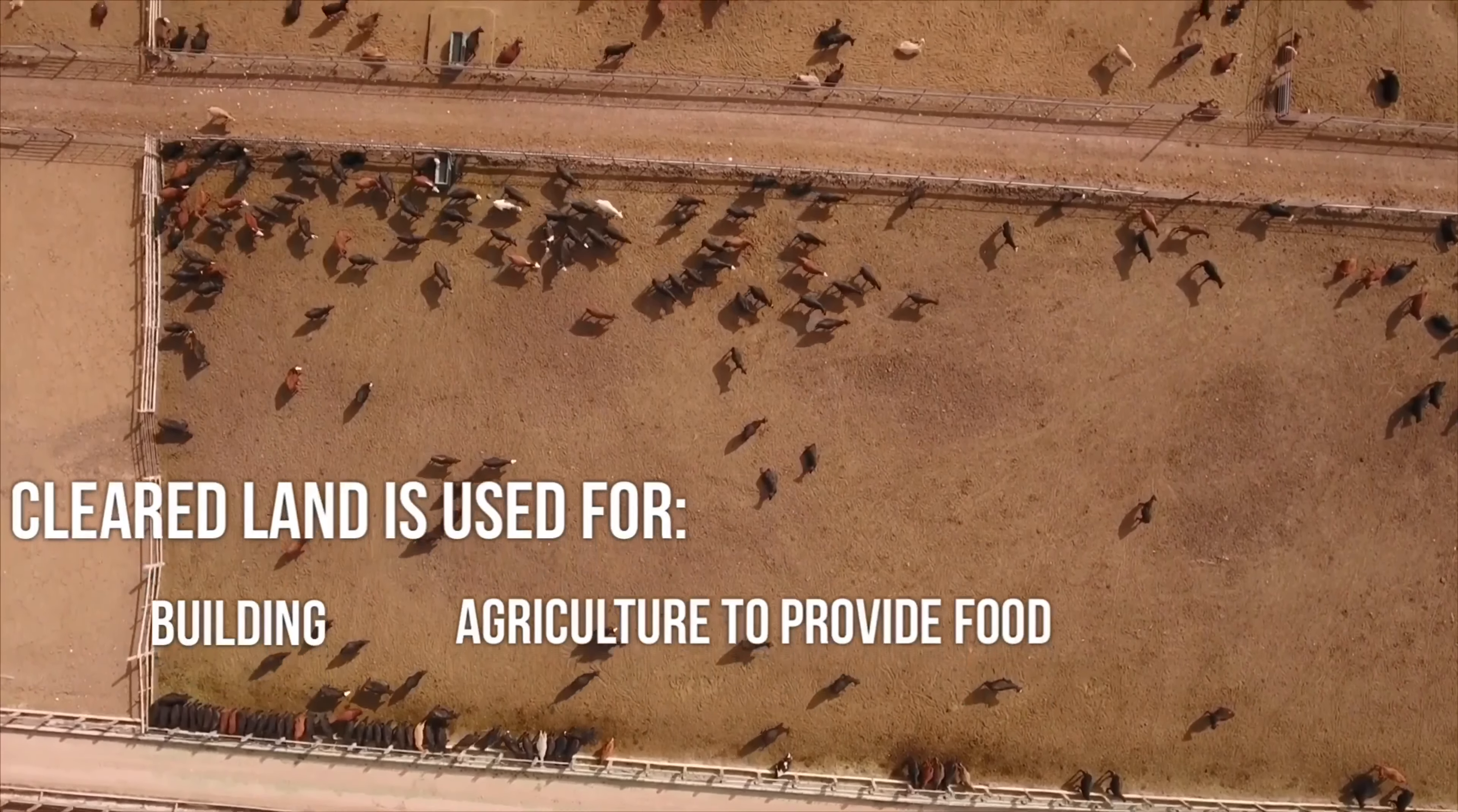When we then look at methane in the atmosphere, this also increases. And the reasons for this is because of rice production and activities of the microbes in the waterlogged soils, and also the increased number of cattle that produce the methane.